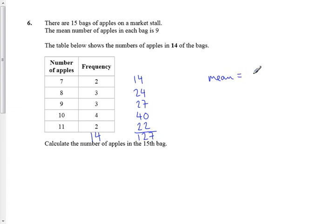So the calculation would be, to do the mean, you would do for 14 bags, not the 15. The 14 bags is 127 divided by 14. That's what you would normally do.